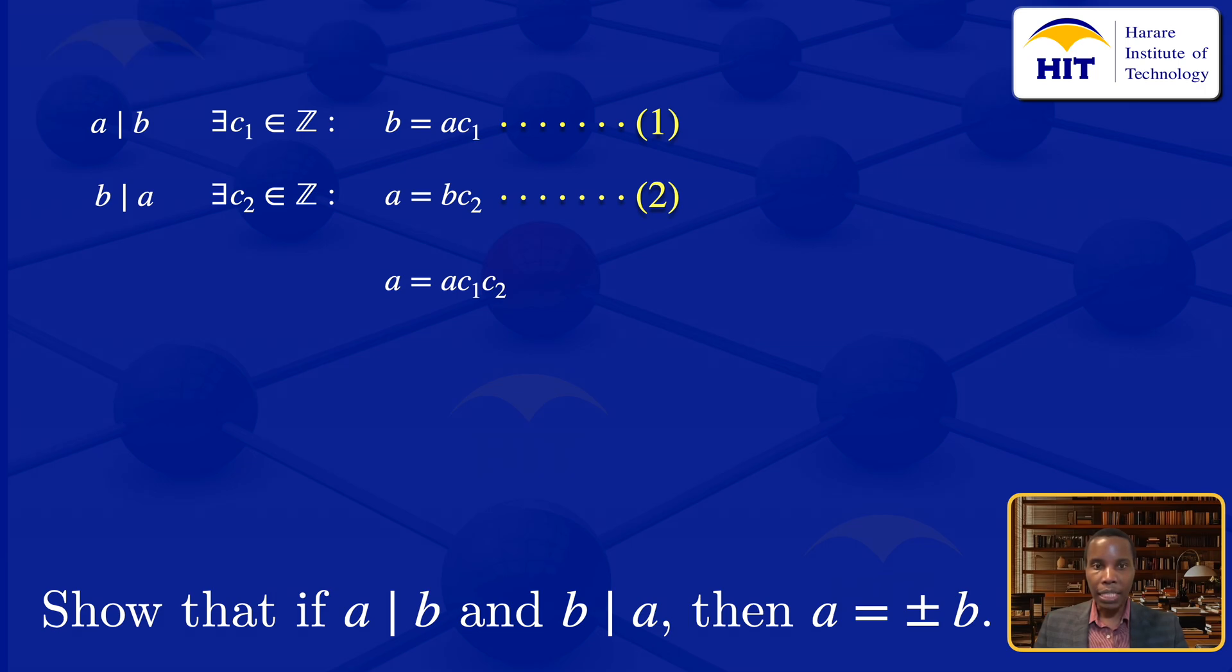If we compare the coefficients of A, on the left-hand side it's 1, on the right-hand side it's C₁C₂. So this equation says C₁C₂ = 1.